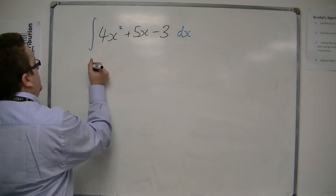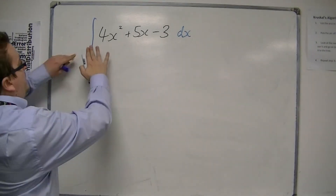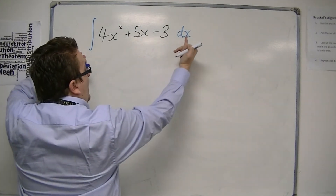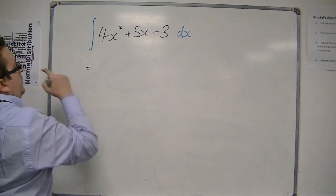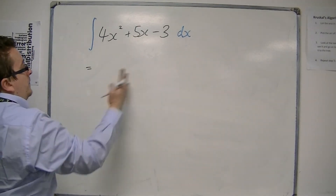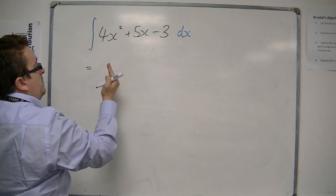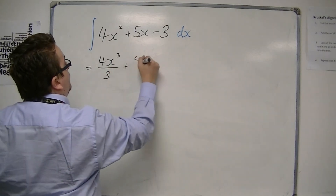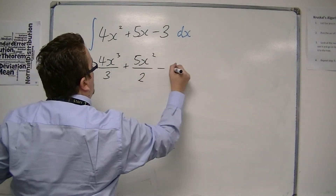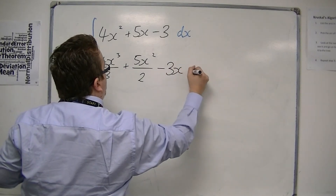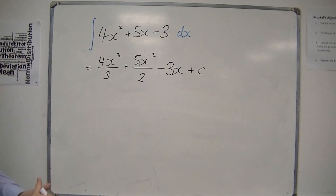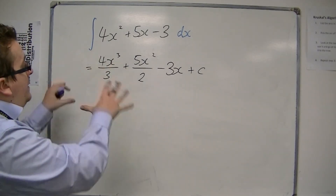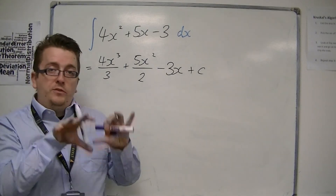So when we integrate, we can now say the integral of 4x squared plus 5x minus 3, with respect to x — that's how you would word it — is equal to: you add 1 to the power and divide by the new power, so we get 4x cubed over 3, plus 5x squared over 2, minus 3x, and we must have that constant of integration, c. And that is how the integration notation is used.